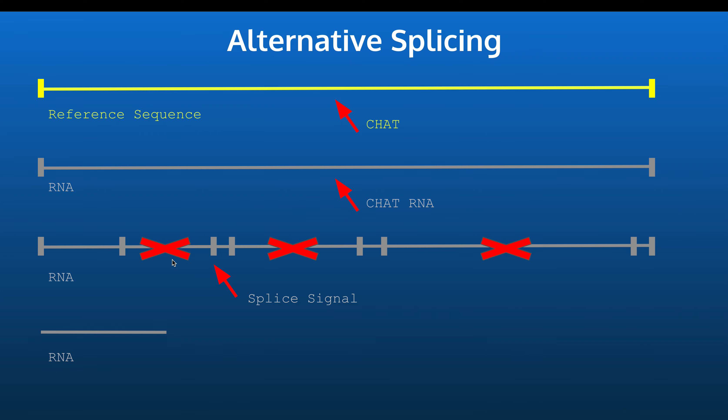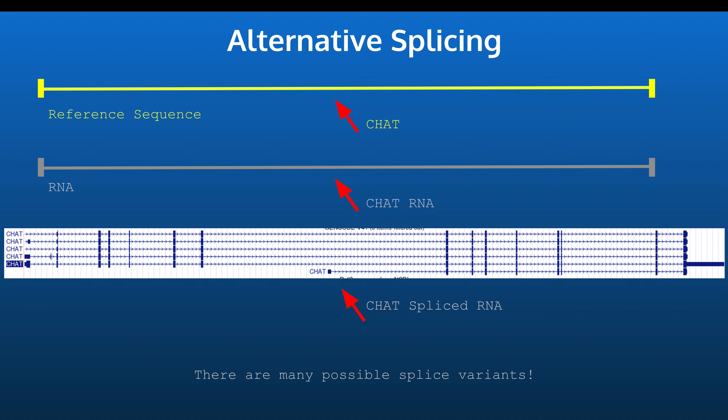So if you have a different protein, it has a different shape, it'll also have a different function. So alternative splicing, as is seen here, is another way of generating diverse products within the cell. And this is copied directly from the UCSC genome browser. As is shown, CHAT has many different possible splice variants, each of which can have their own possible function.